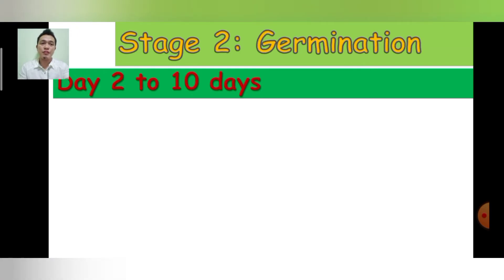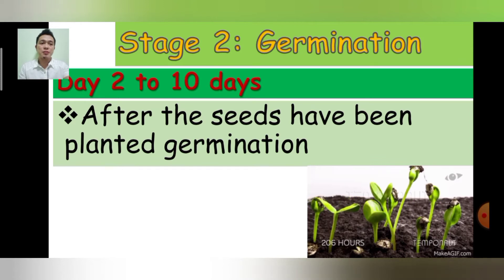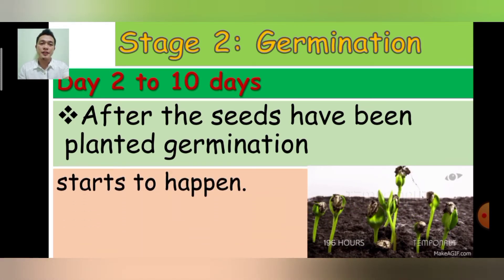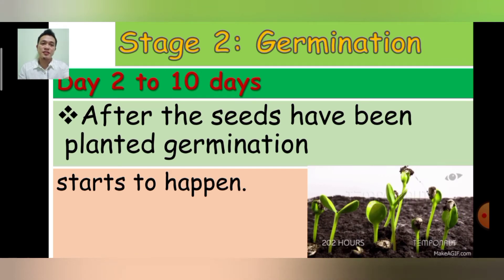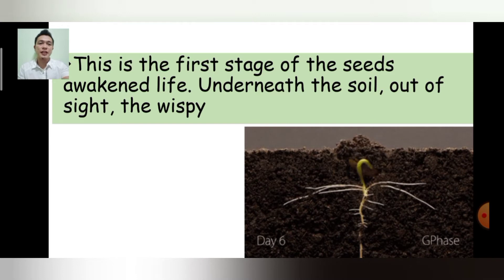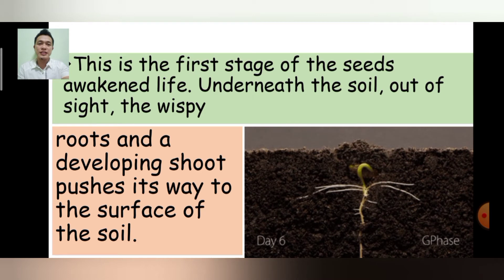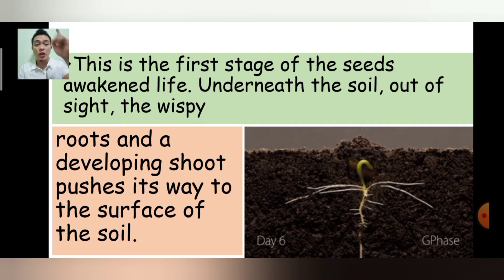Stage 2: Germination — Day 2 to 10. After the seeds have been planted, the germination process starts to happen. As you can see in the pictures or GIF, that's what we call germination. This is the first stage of the seeds — awakened life underneath the soil out of sight. The wispy roots and a developing shoot push their way to the surface of the soil. The roots go into the soil while the shoot goes up to meet the sunlight.